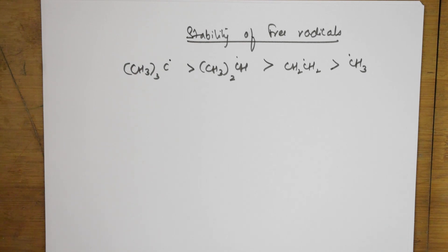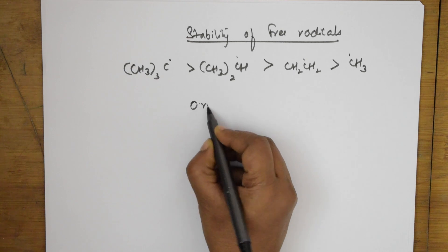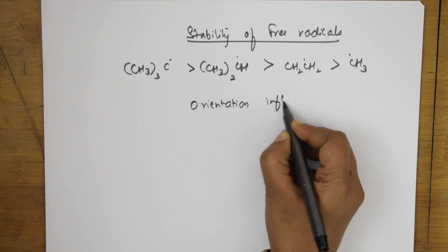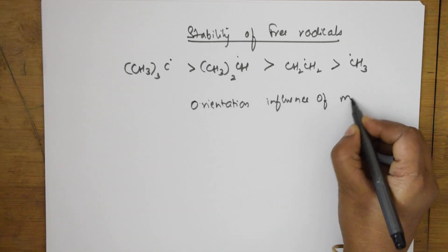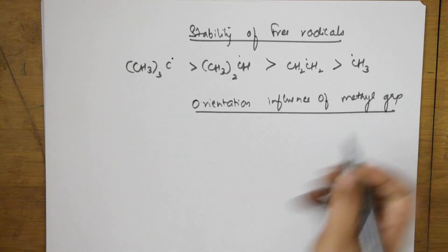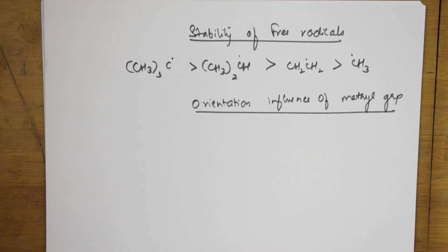Now let us see how we can use the concept of hyperconjugation in explaining the orientation influence of the methyl group. The methyl group is an ortho-para directing group. Orientation means which positions it directs — ortho and para, not meta. The ortho-para directing influence: methyl groups are always ortho-para directing.